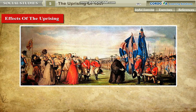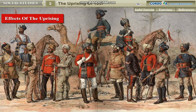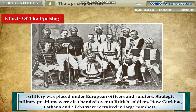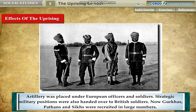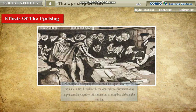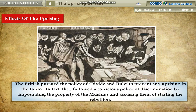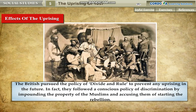The number of European soldiers was increased in comparison to Indians. Artillery was placed under European officers and soldiers. Strategic military positions were also handed over to British soldiers. Now Gurkhas, Pathans and Sikhs were recruited in large numbers. The British pursued the policy of divide and rule to prevent any uprising in the future.